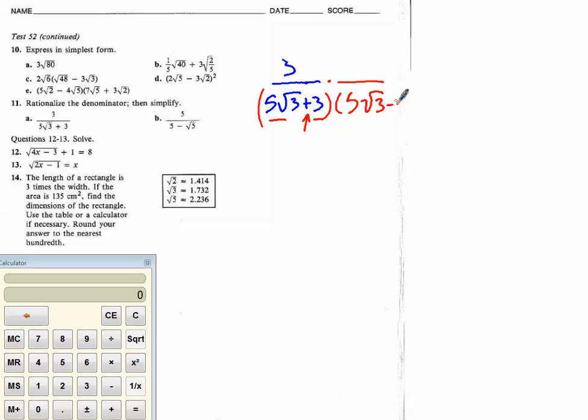So, we have 5 root 3 minus 3. Here we go. And then we're also going to have to multiply 3 by 5 root 3 plus 3. And so, let's multiply. So, our numerator is going to end up being 15 root 3 plus 9. Because I have to add, 3 times 3 is 9. 3 times 15 is 15.